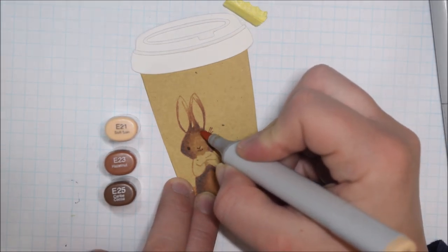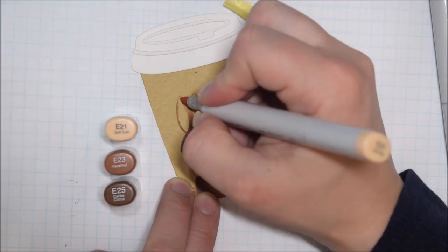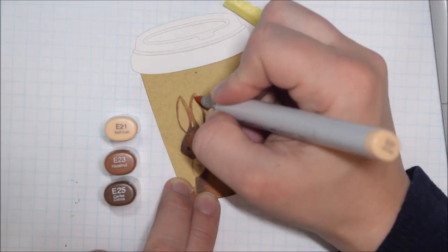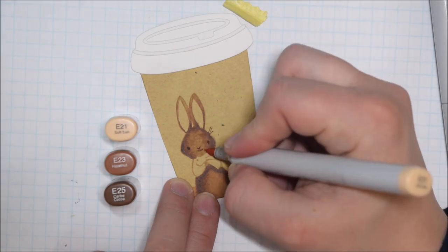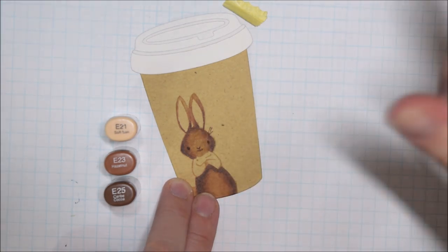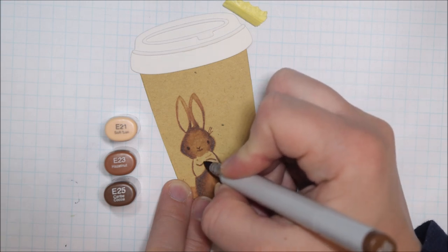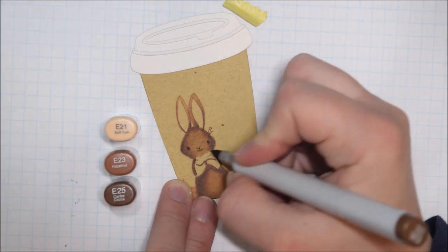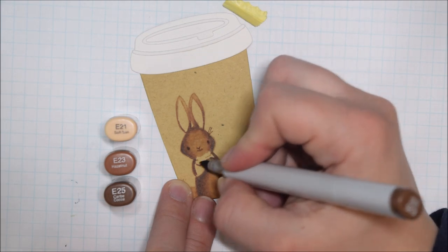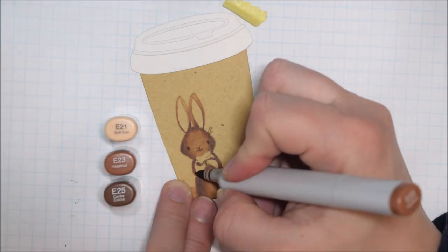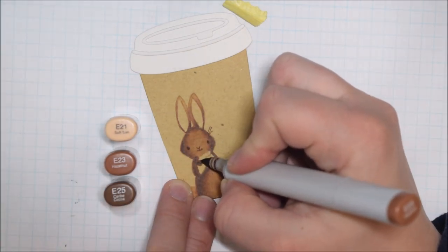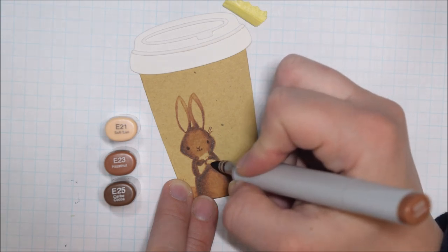I am trying not to make my shadows too dark, especially on his face. I really want there to still be some contrast, and I think that's maybe a bit more challenging to do when you're coloring on craft because there's already so much color underneath, so you have to be more careful about your shadows.